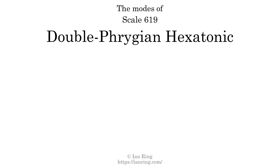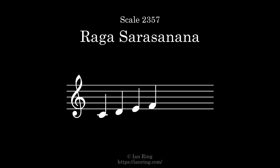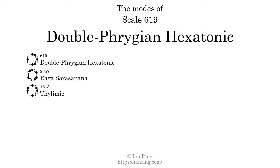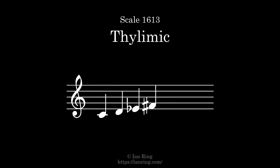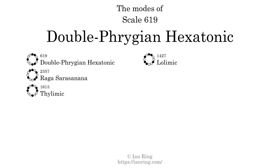This scale has six modes. The first mode is itself. The second mode is scale 2357, also known as Raga Sarasana. The third mode is scale 1613, also known as Thilimic. The fourth mode is scale 1427, also known as Lulimic.